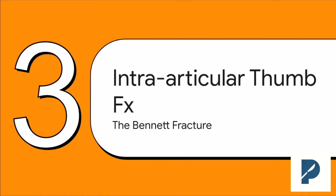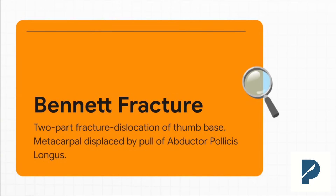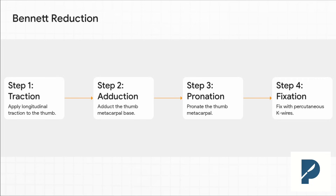Let's switch gears and talk about the thumb — specifically, a really important intra-articular fracture: the Bennett fracture. It's an intra-articular fracture at the base of the thumb metacarpal. The absolute most important part to understand is the deforming force. You've got the APL tendon — the abductor pollicis longus — constantly pulling that large metacarpal fragment dorsally, radially, and proximally. It's this unopposed pull that you have to fight against during your reduction. The classic technique: first, you pull traction along the length of the thumb to disimpact the fracture.